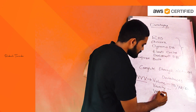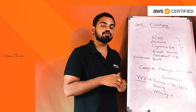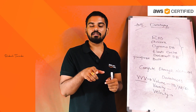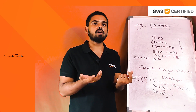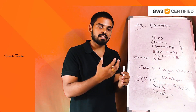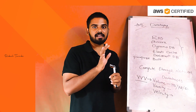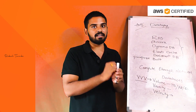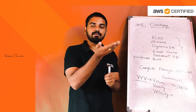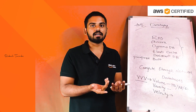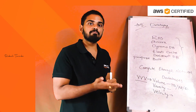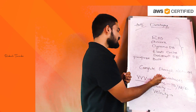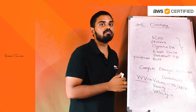The third V is Velocity — meaning how fast we can retrieve application data. For a website, we need fast access. For reporting or analytics, we may be okay with retrieval times of one minute or ten minutes. The speed of data retrieval determines the database choice. These three V's — Volume, Variety, and Velocity — help us decide which database to use.